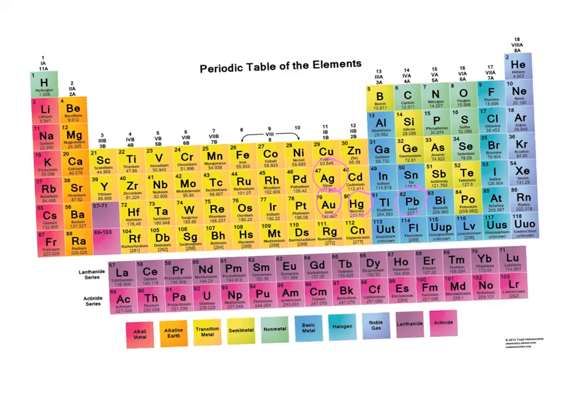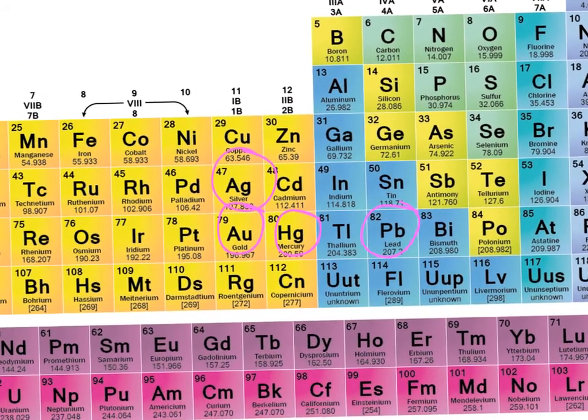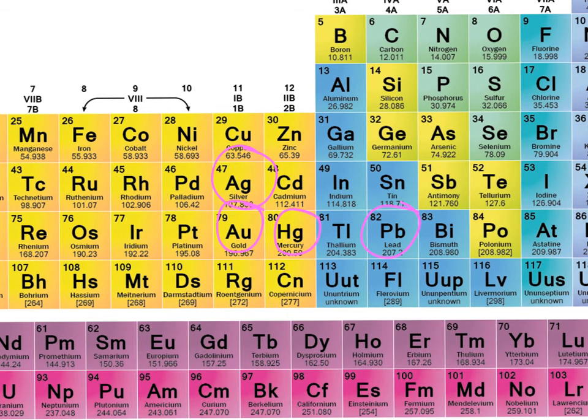AG is silver, HG is mercury, AU is gold, and PB is lead. So why the wild names? Well, it turns out that all these elements have Latin origins, and that the Latin name that the symbol comes from doesn't always match up with the English name. Here are a few common examples.